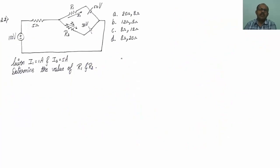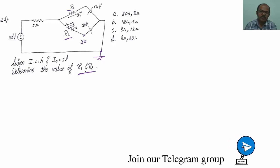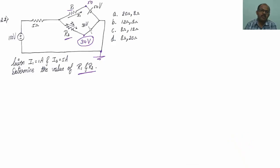Let us discuss the second question. We have to find the values of R1 and R2. Let me consider the bottom node as ground (0 potential). With respect to ground, one node is at 30 volts and another node is at 50 volts. Applying nodal analysis, let me assume the unknown node to be Vx.